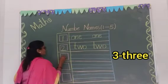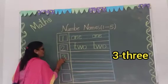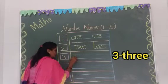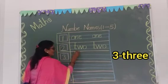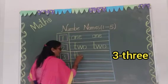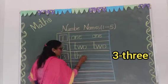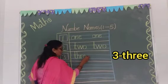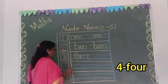Number 3. T, H, R, E, E. Three. Now, number 4.